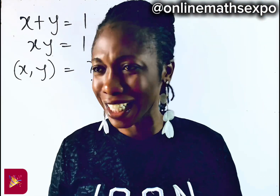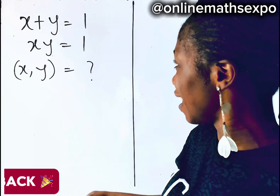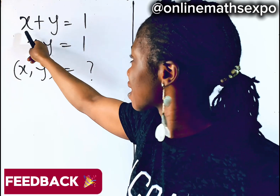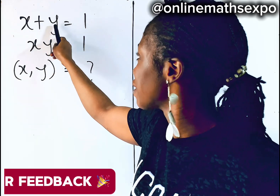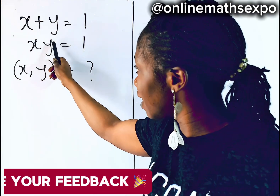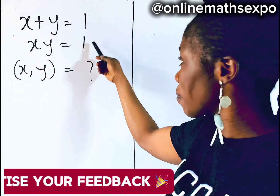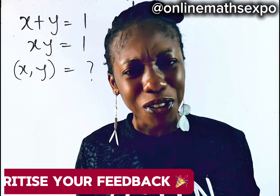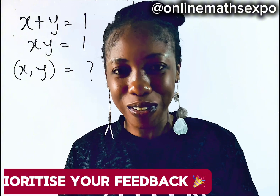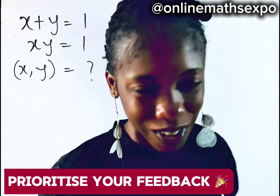Hello, beautiful one. Can you solve this challenge? We are told: what two different numbers can we add that will give us one, and when we multiply the same numbers, it still gives you one? You'll be like, what are those numbers? Don't worry, I'm going to take you through it step by step. Let's do this together.